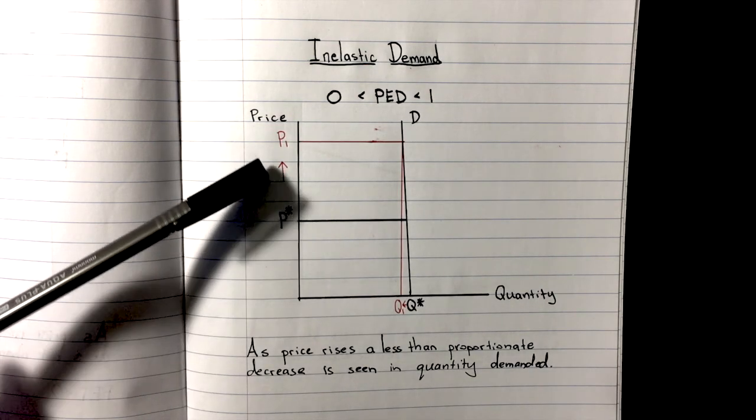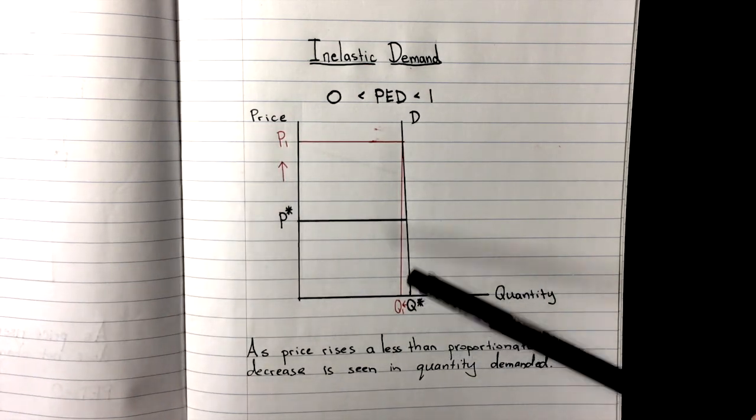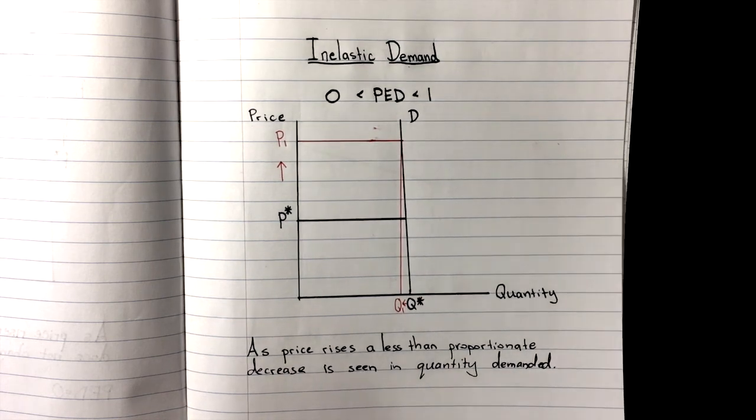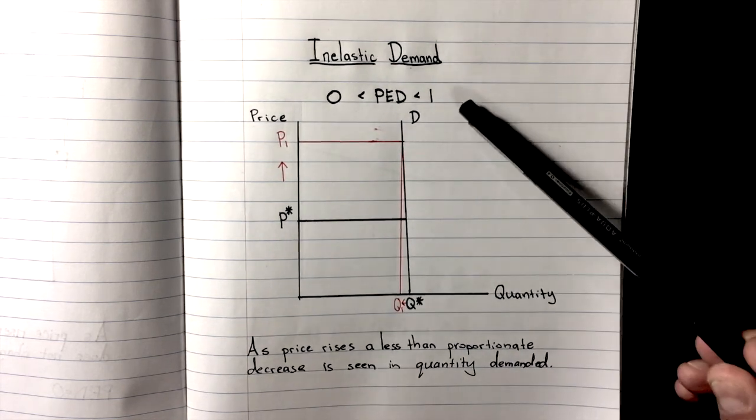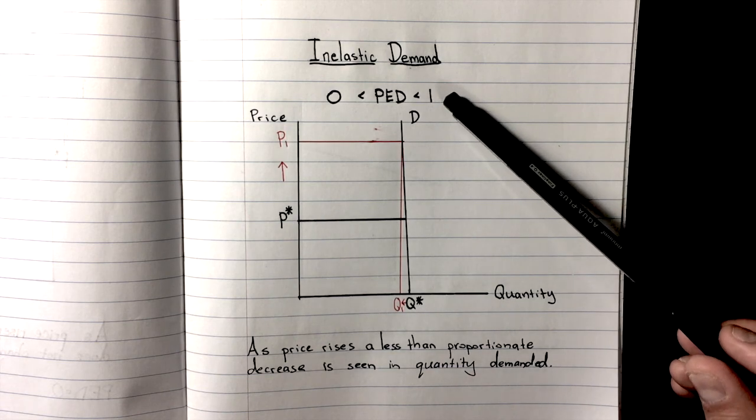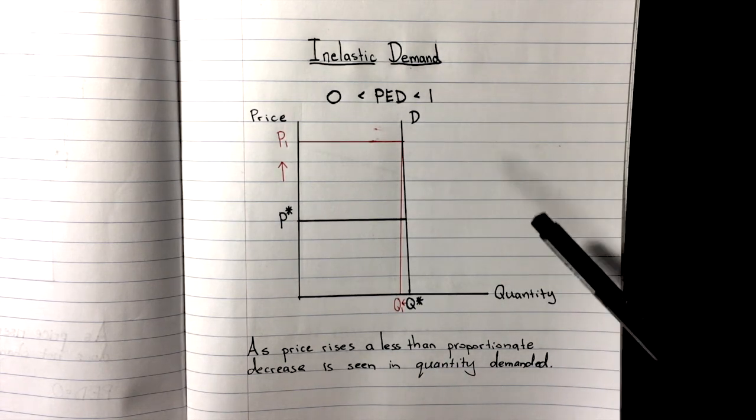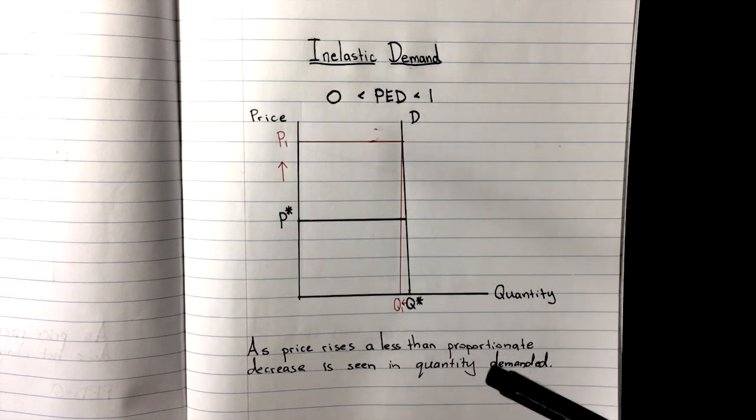Now that happens to work going upwards, as well as when the price would be coming down. So we say any change in price results in a less than proportionate change in quantity demanded. And the value for inelastic demand is always going to be in between zero and one. So we take the absolute value, and we'll notice that value should always fall between zero and one.